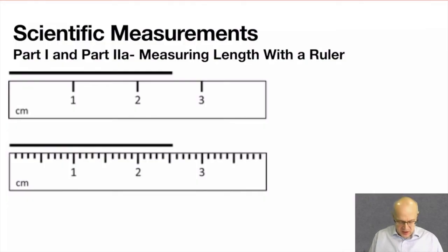So I have confidence that this line is two point something. We don't know where it is. There's no number written to tell us what the first decimal point is, but we can estimate it. So I'm going to say that this line is 2.5 centimeters.